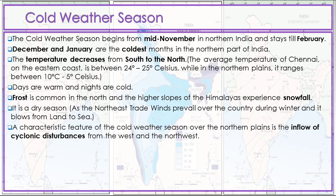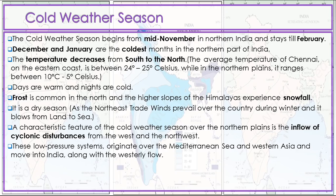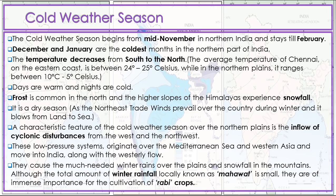It is a dry season as the northeast trade winds prevail over the country during winter and blow from land to sea. A characteristic feature of the cold weather season over the northern plain is the inflow of cyclonic disturbances from the west and the northwest. These low pressure systems originate over the Mediterranean Sea and West Asia and move into India along with the westerly flow. They cause much-needed winter rain over the plains and snowfall in the mountains. Although the total amount of winter rain, locally known as Mahavad, is small, they are of immense importance for the cultivation of rabi crops.